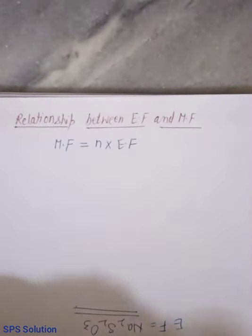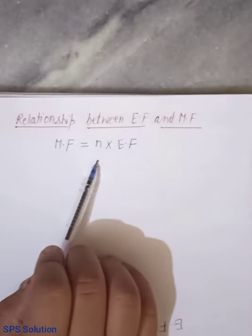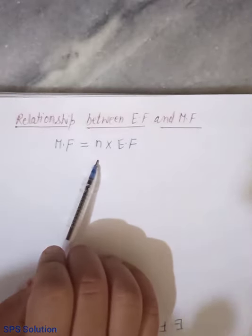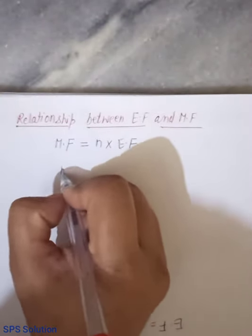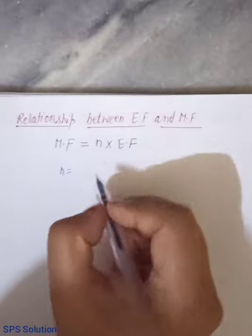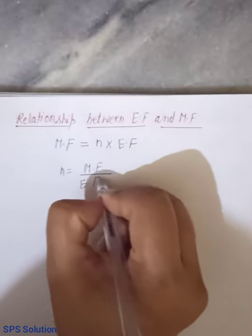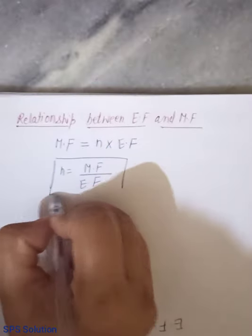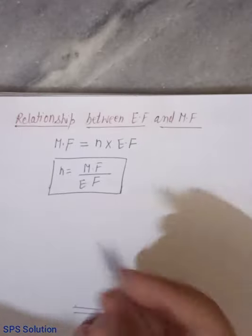Jabhi bhi humko molecular formula calculate karna hoga, we have to use this relationship. This relationship means we have to calculate n is equal to, this goes here, molecular formula by empirical formula. Ye abhi aapko samaj mein nahin aara hoga that how it will be calculated, ham mein values kaanse mein lehengi. That value I will give you, how do you have to calculate these values.